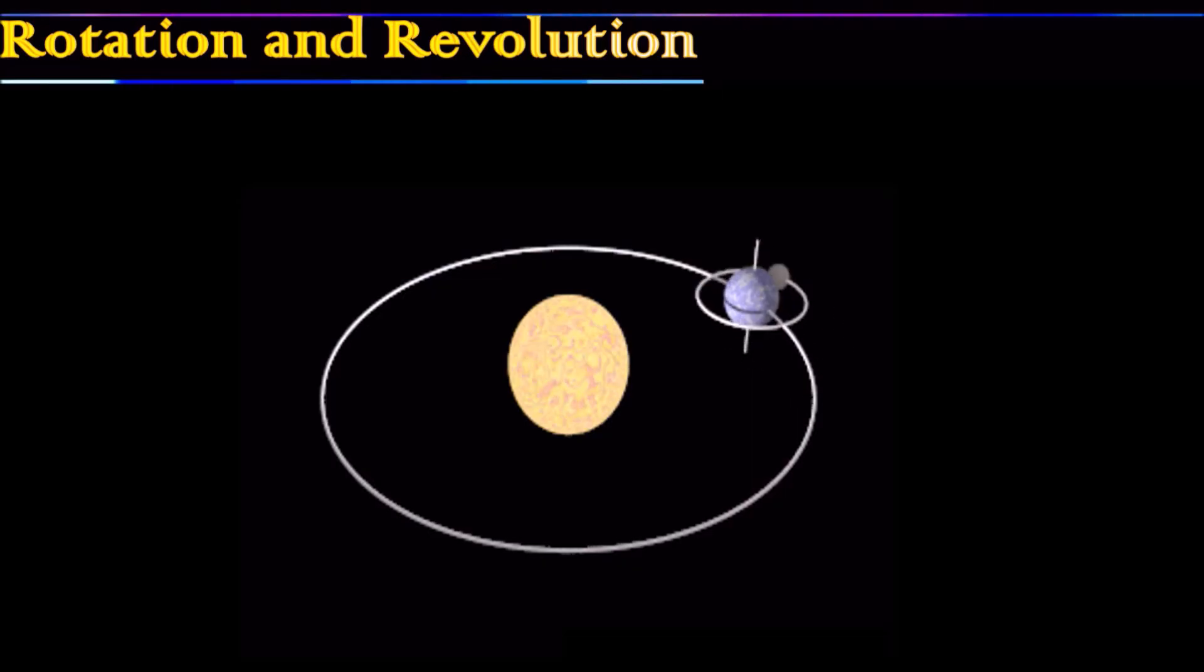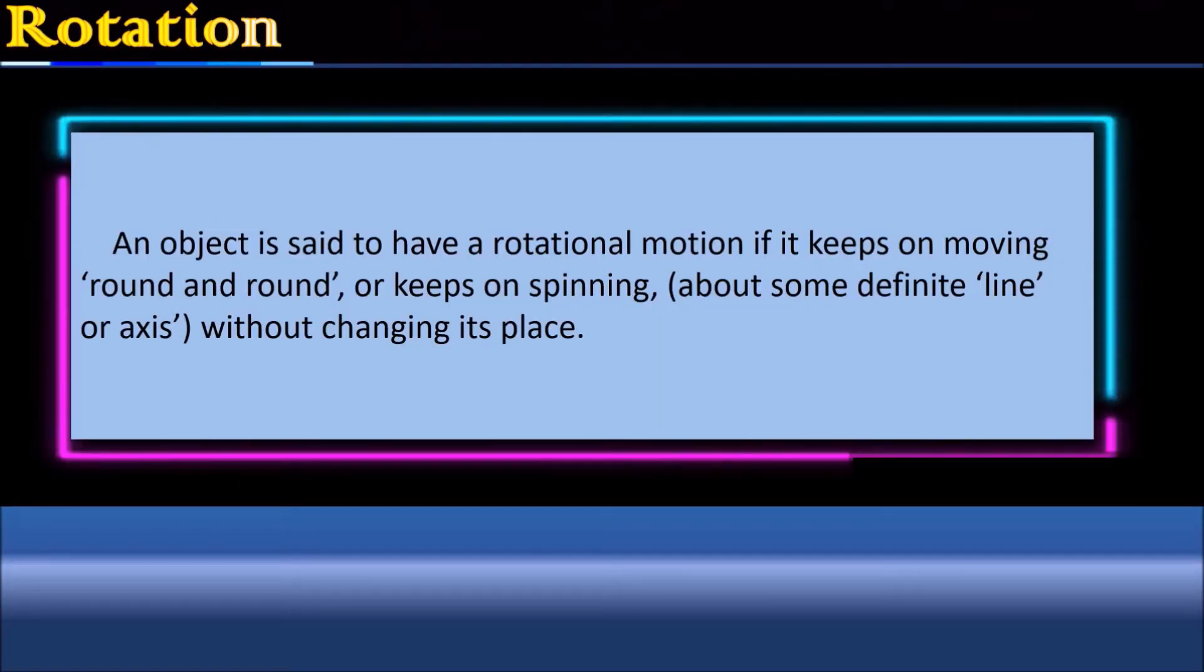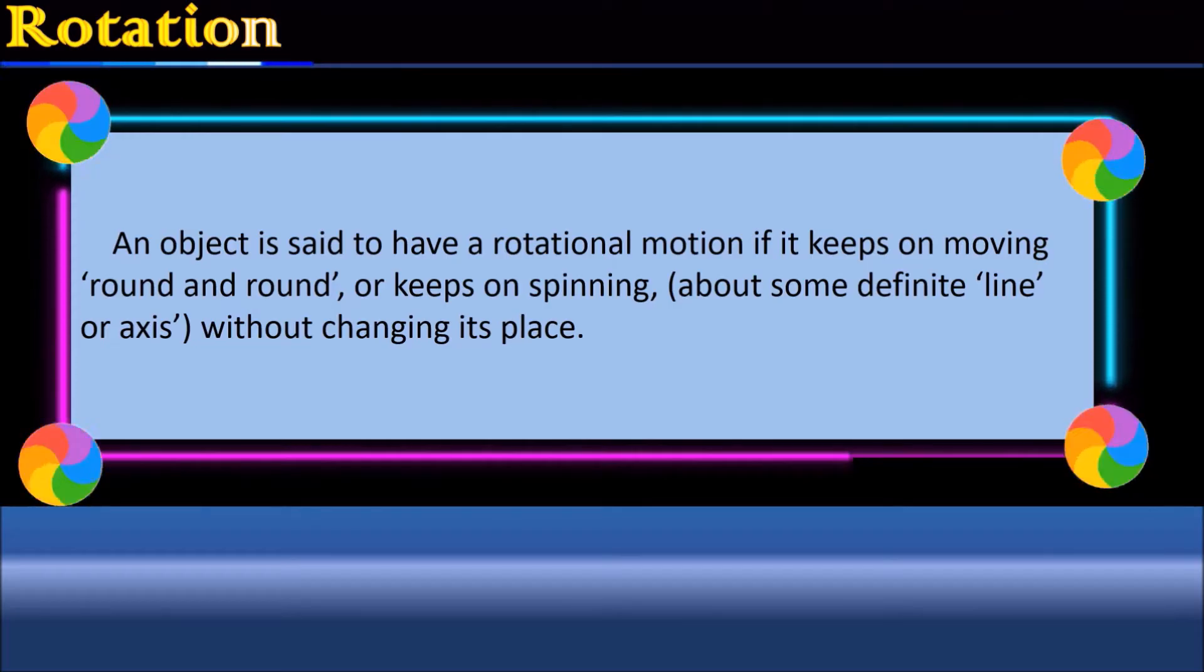Rotation and revolution. Let us explore one at a time. Rotation. An object is said to have a rotational motion if it keeps on moving round and round or keeps on spinning about some definite line or axis without changing its place.